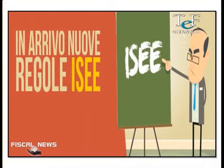La riduzione va dal 10% al 100%, perché le fasce previste dall'università sono 5. Ricordate che la domanda va fatta esclusivamente online e di indicare il numero di protocollo che trovate sull'attestazione ISEE. Quindi cosa è cambiato rispetto all'anno precedente?